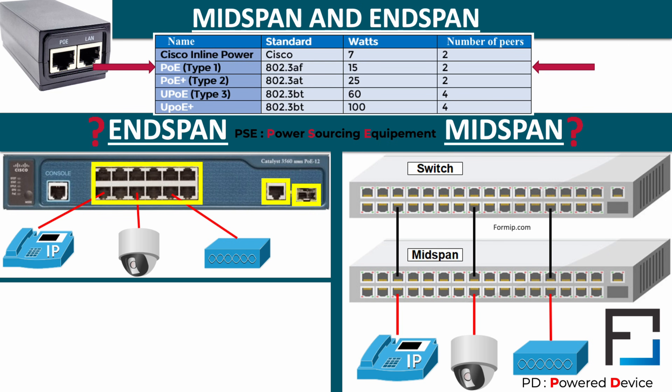Type 1 is the first PoE standard, 802.3af, from 2003, that delivers up to 15.4 W of direct current to each device. It can be used with UTP Category 3 or 5 cables. This type is very useful for VoIP phones, dual-radio wireless access points, and IP cameras that do not have a motorized function.